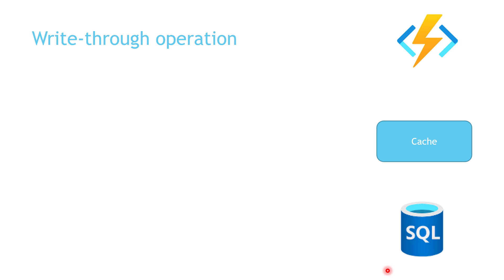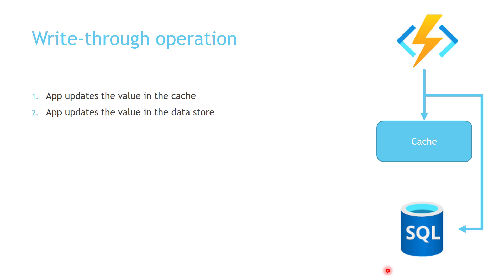For the write-through operation, the application updates the value in the cache, and at the same time, updates the value in the data store as well. There is additional latency you might expect here because you are updating data in two places — the data store and the cache.